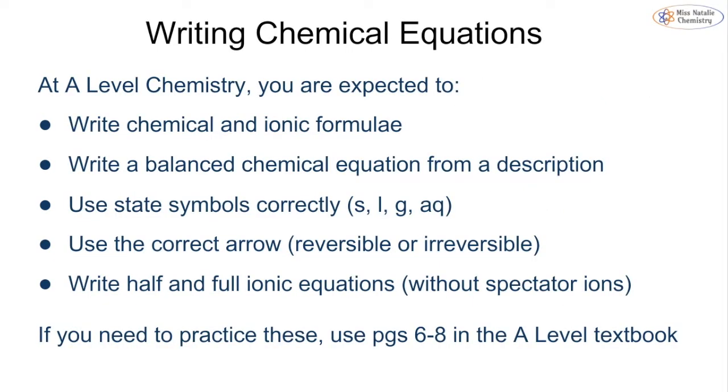At A-level chemistry you're expected to write chemical and ionic formulae, balance chemical equations, use correct state symbols, use the correct arrow (reversible with double-headed arrow or irreversible with single-headed arrow), and write half and full ionic equations with and without spectator ions. I'm not going through these in much detail because you've covered this in IGCSE, but if you use pages 6 to 8 in the A-level textbook you can practice these.